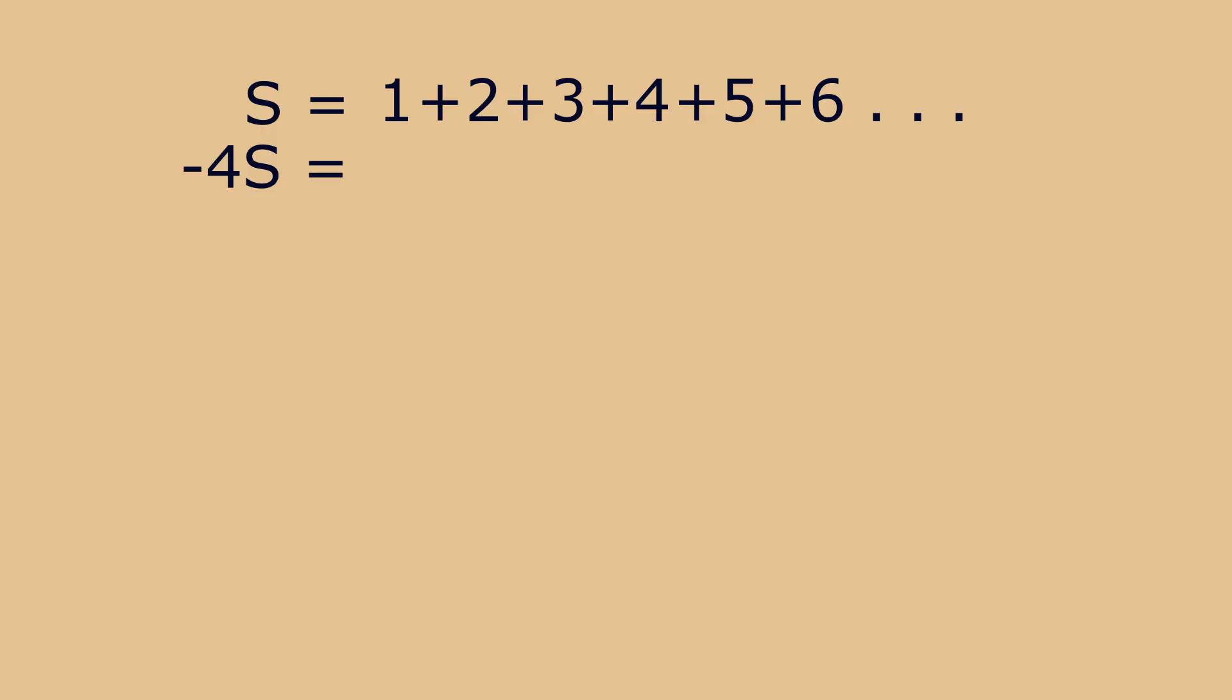We're going to do this in four easy steps. Step number one: multiply both sides by minus 4. So on the left we have minus 4S. On the right we have minus 4, minus 8, minus 12, minus 16, minus 20, minus 24.